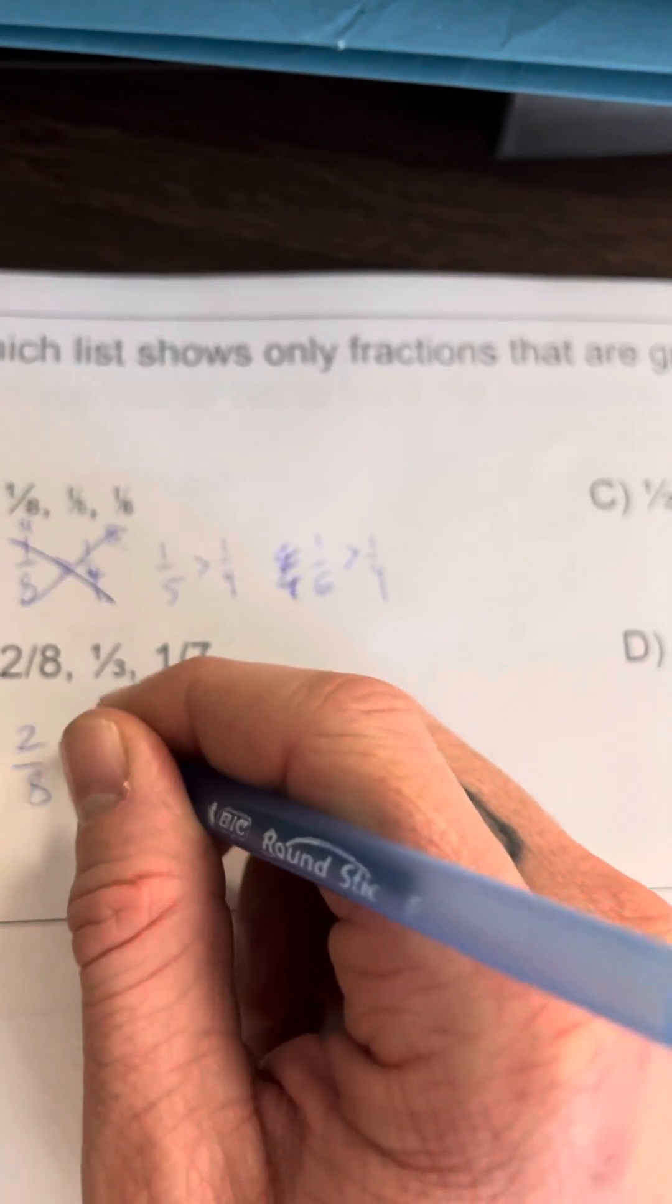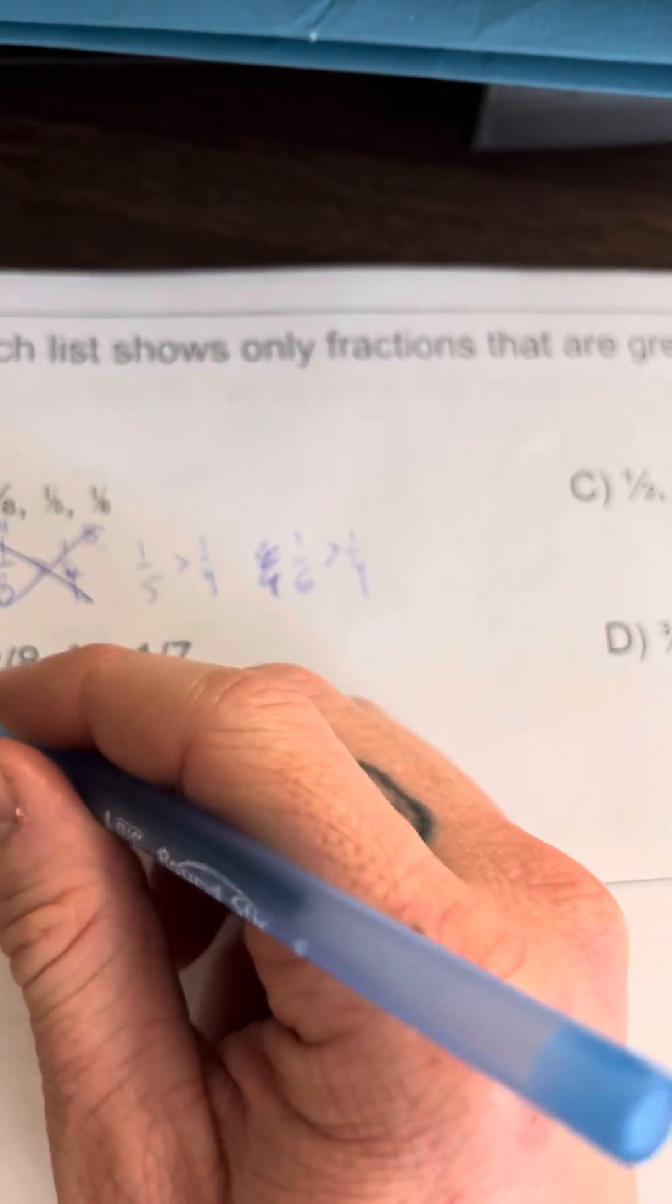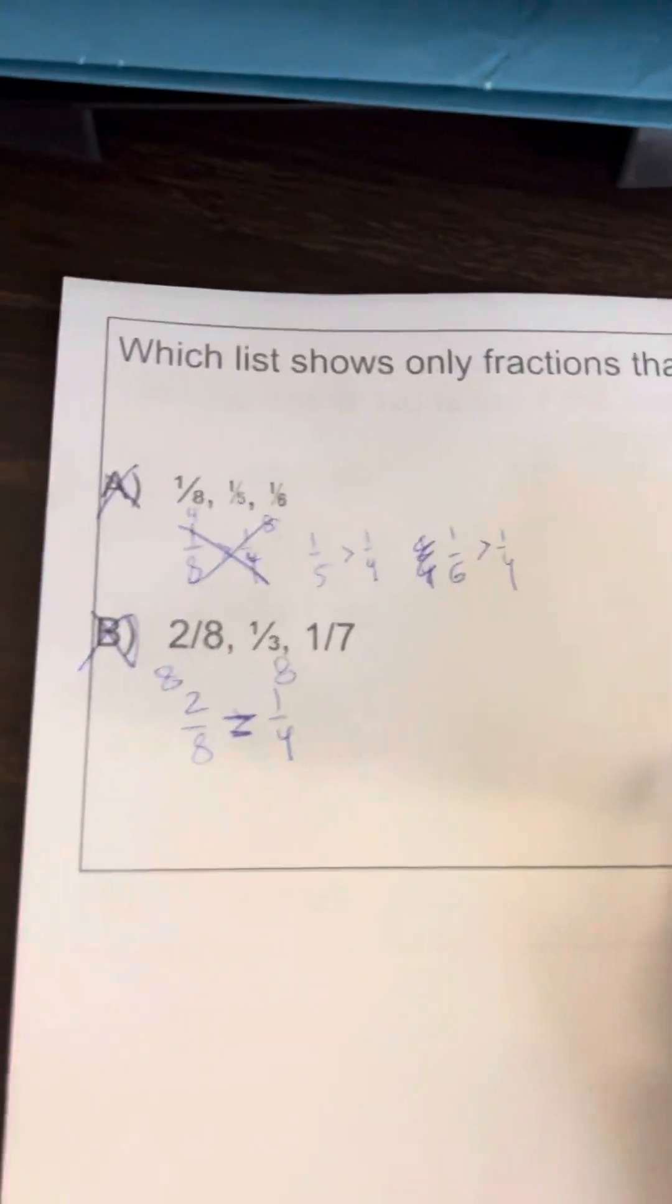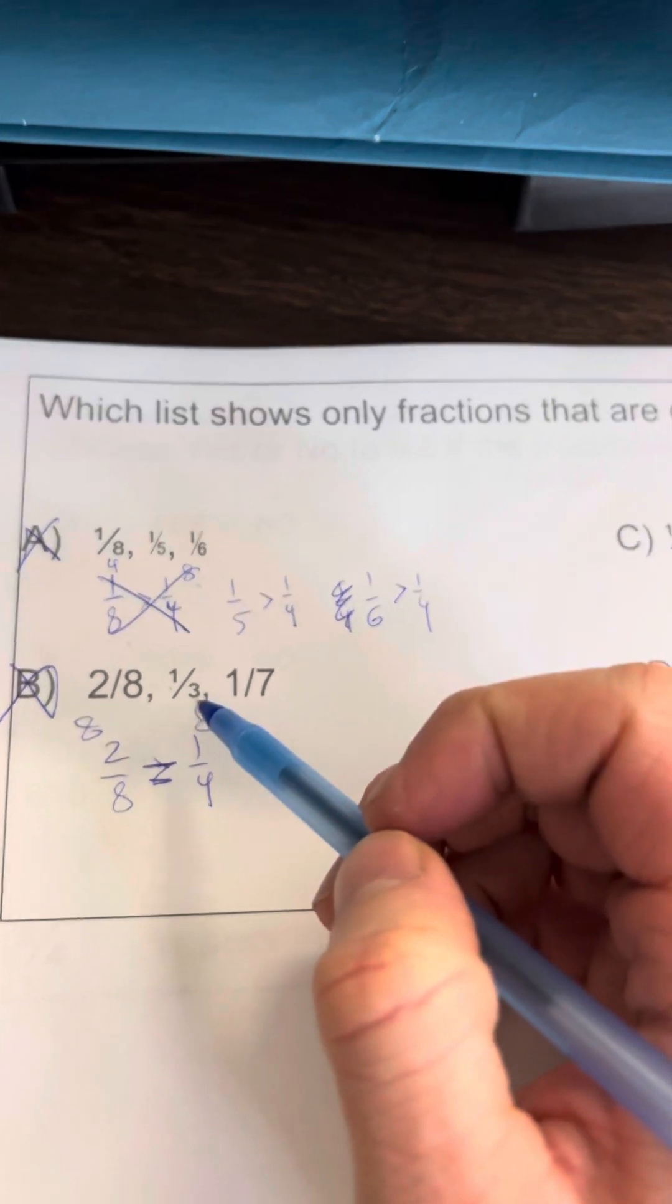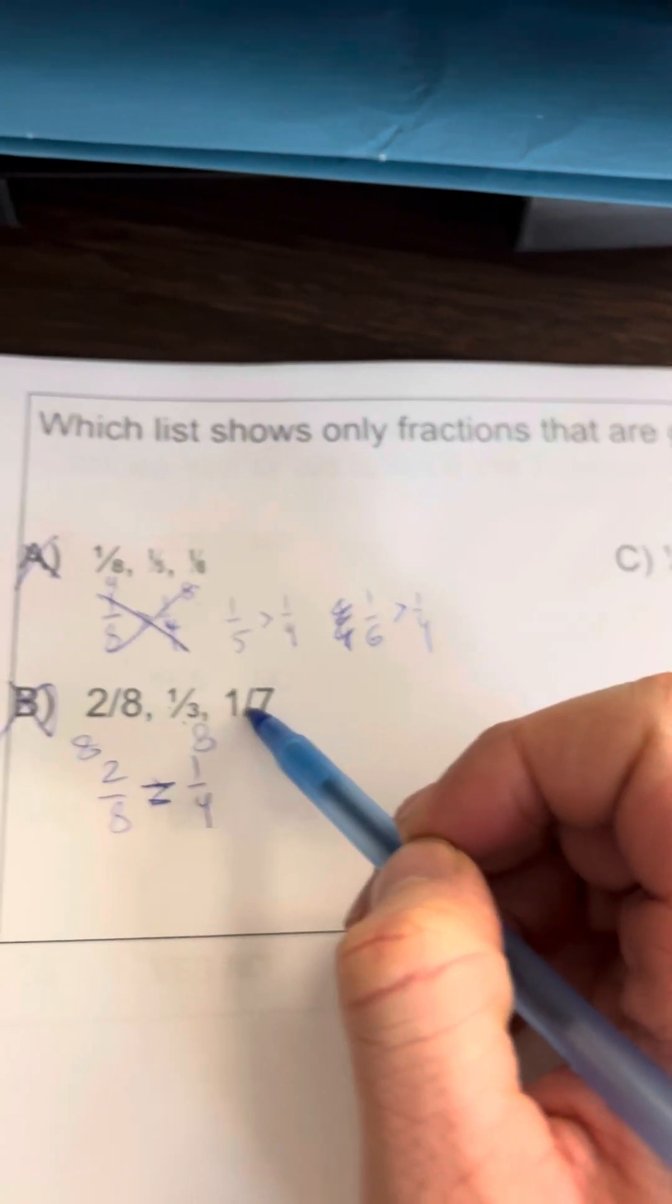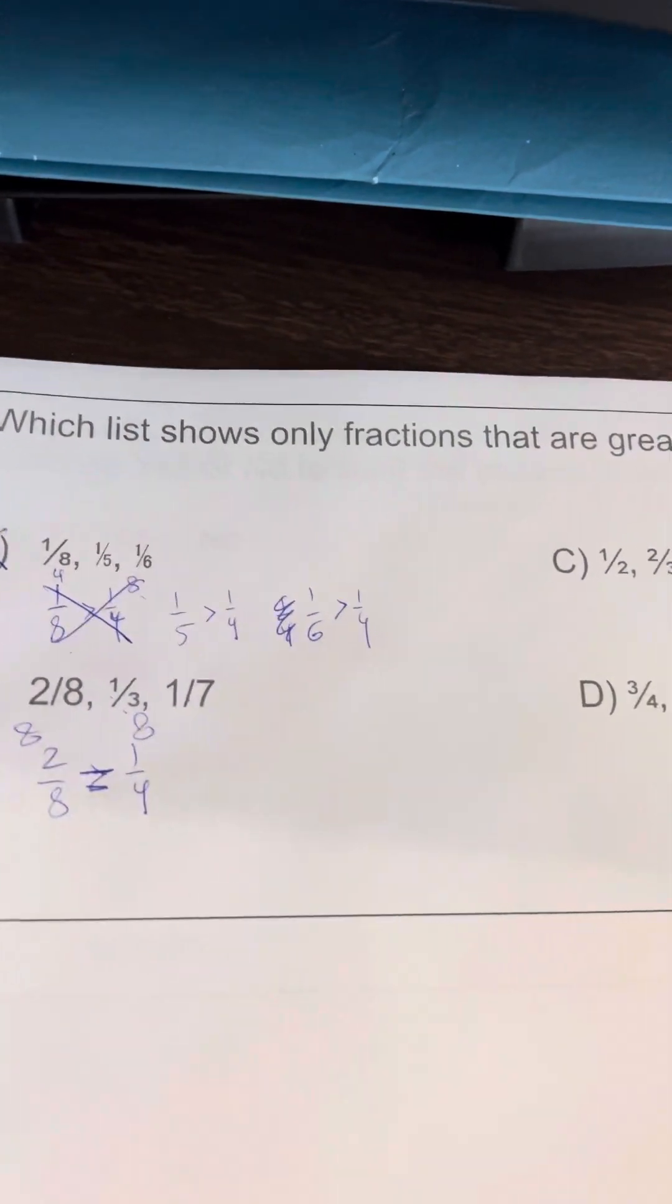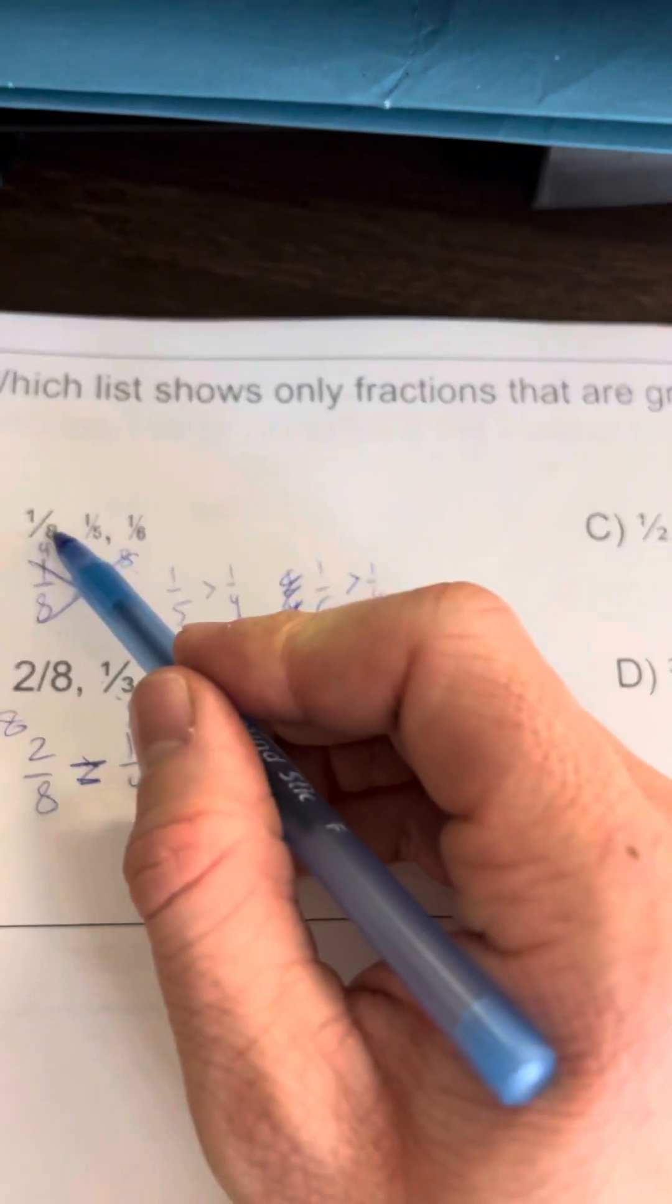Let's check here: two-eighths and one-fourth. This is eight and this is eight—these are equal. So this can't be my answer. And if I checked these, one-third actually is bigger than one-fourth, but one-seventh is not.